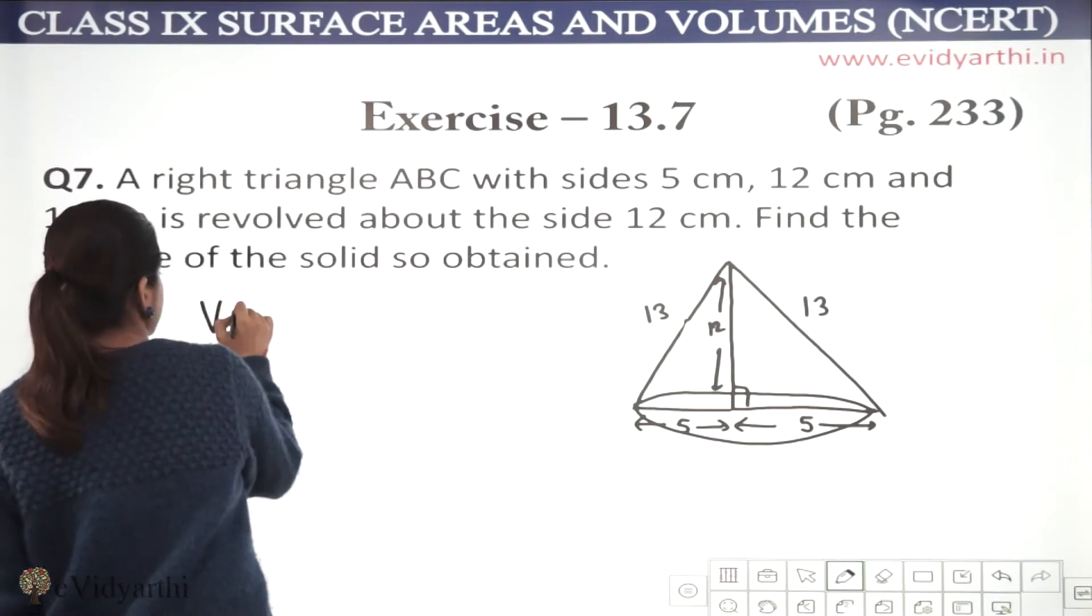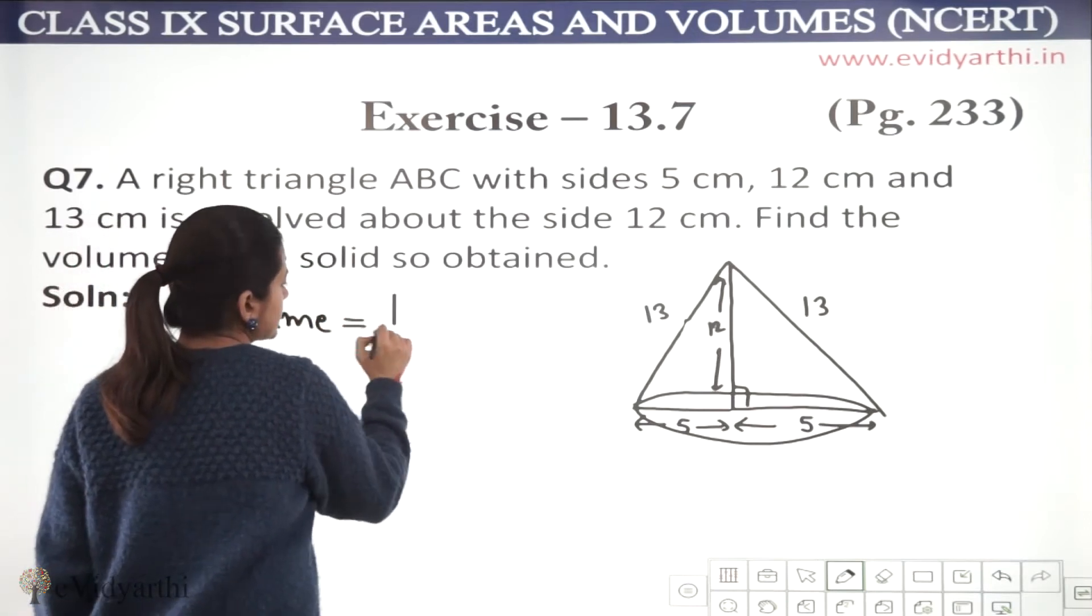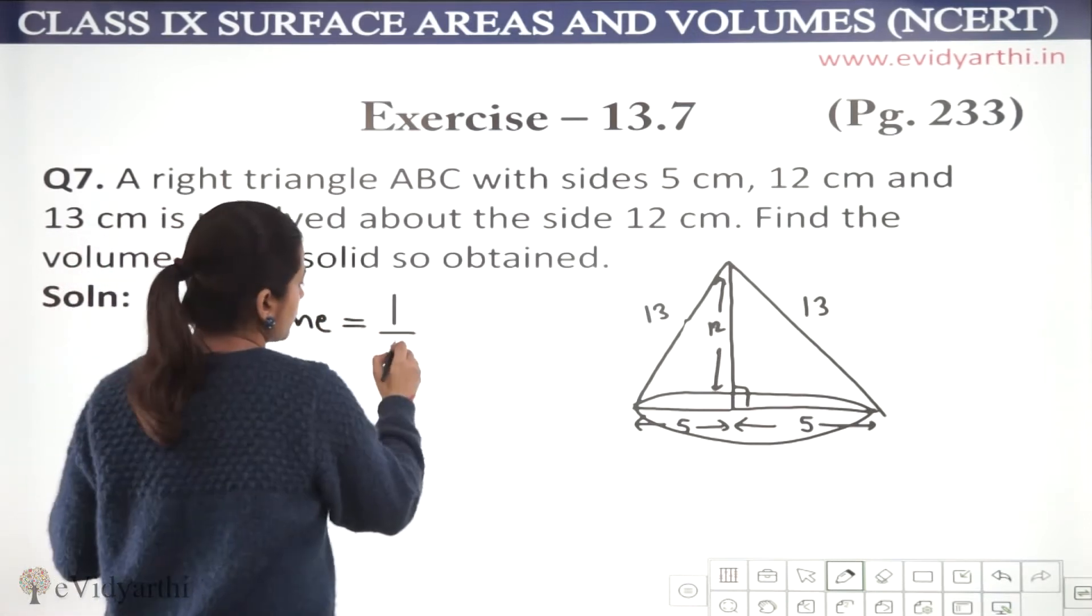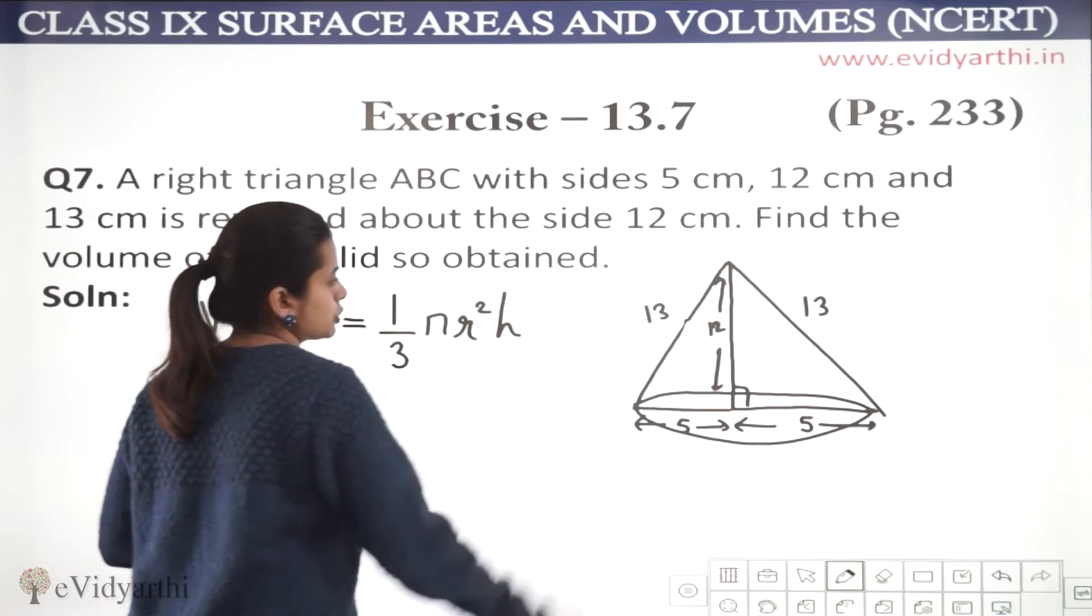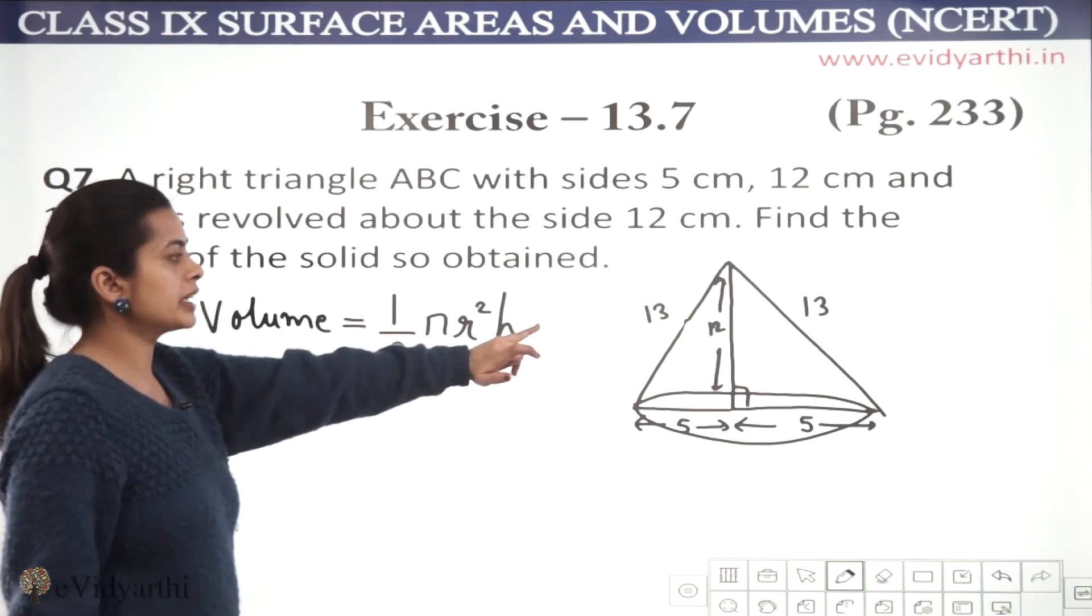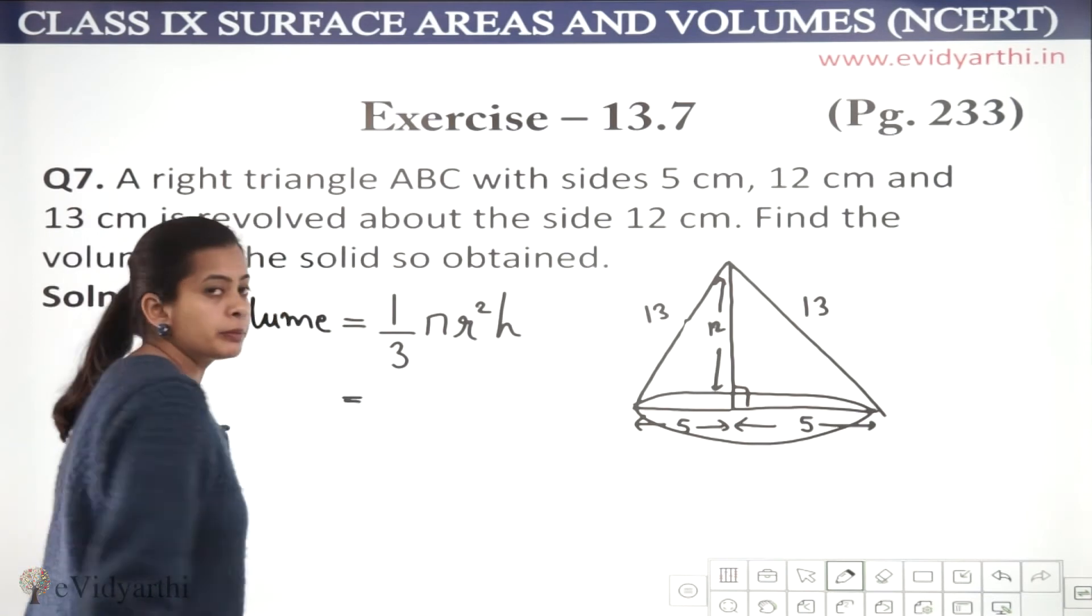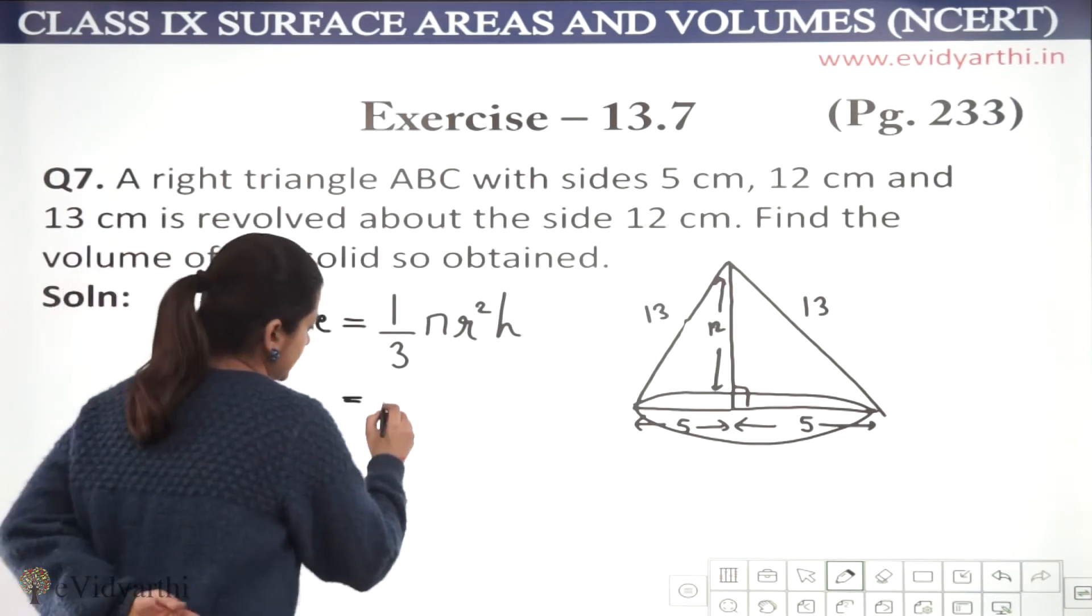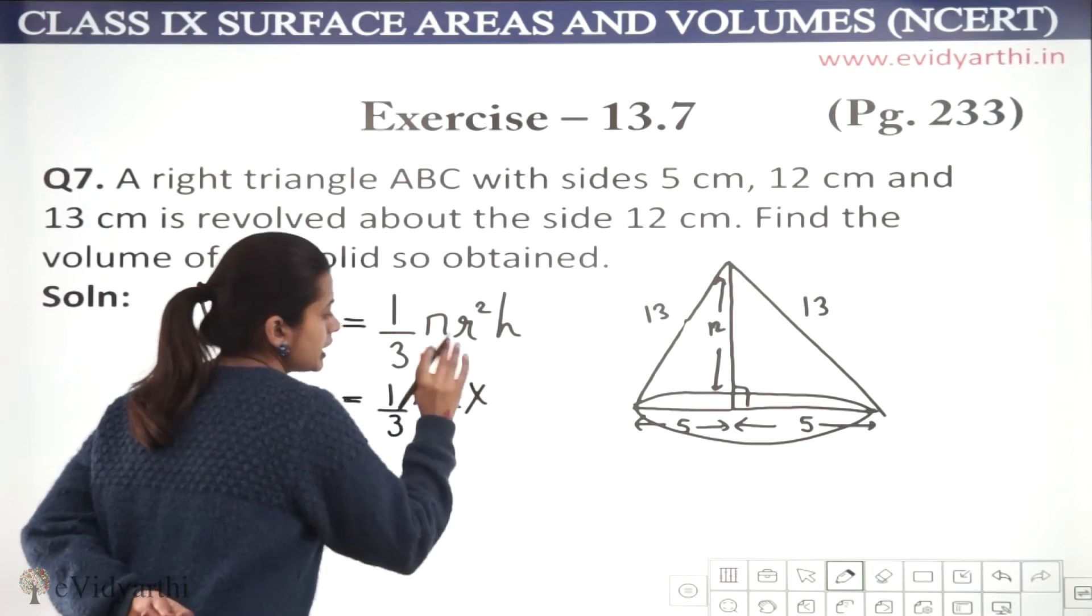So, we know that the volume of the conic section or cone is equal to 1/3 πr²h. So, whatever we have given, we will put the values in our formula and find it. So, 1 by 3, then we will not put the value of pi.